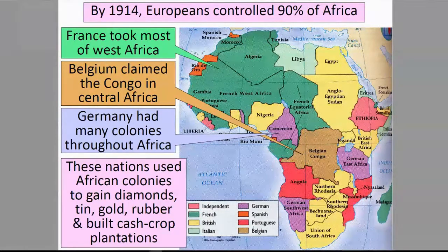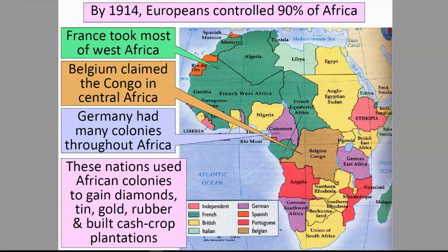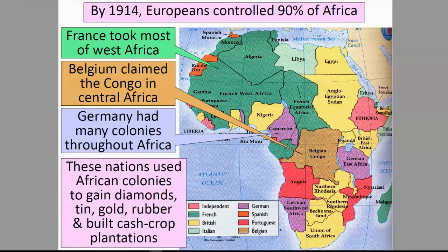France took most of West Africa. Belgium claimed the Congo in Central Africa. Germany had many colonies throughout Africa. These nations used African colonies to gain diamonds, tin, gold, and rubber, and built cash crop plantations.